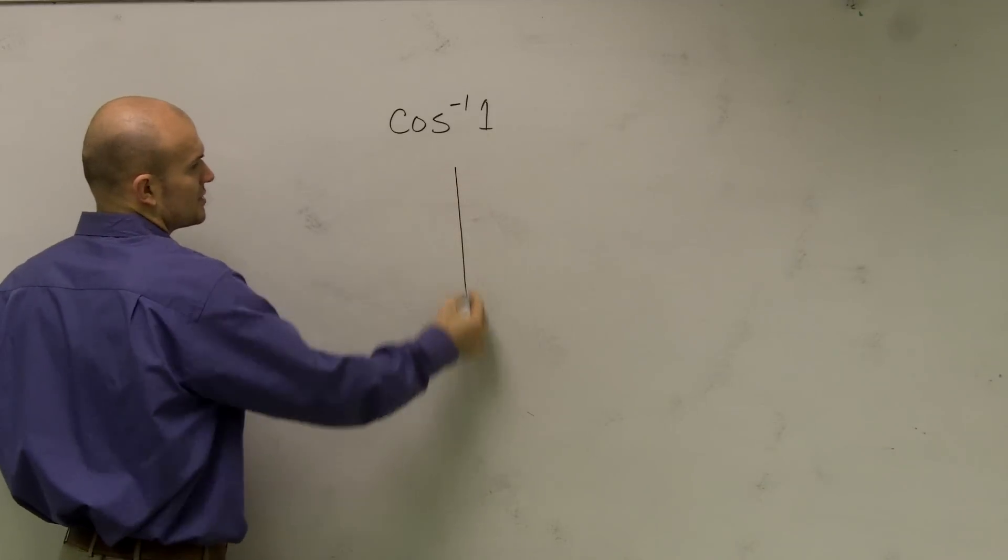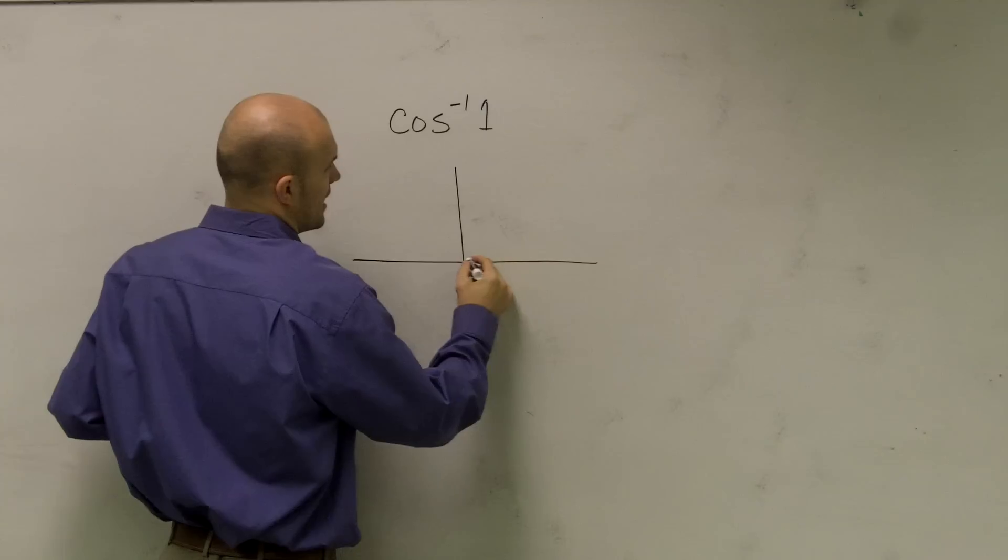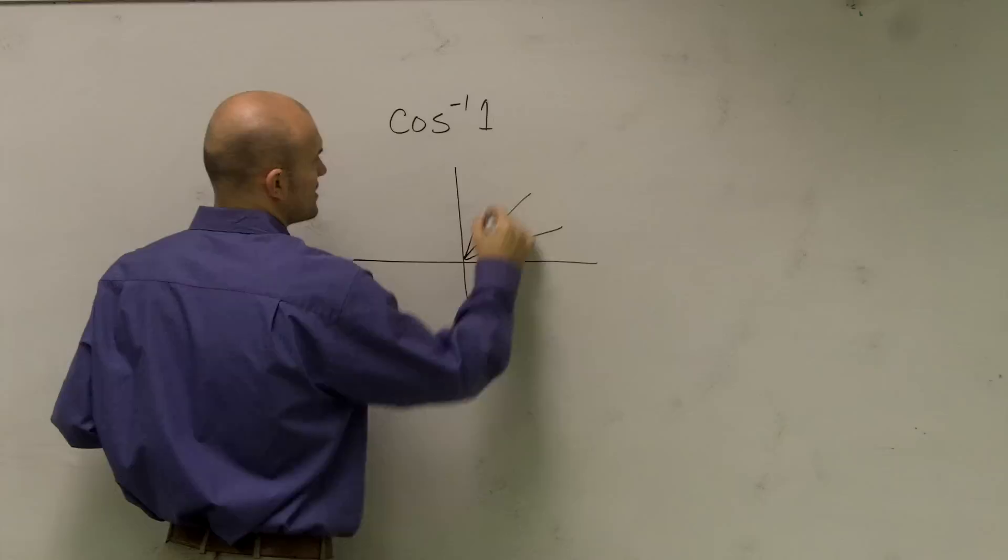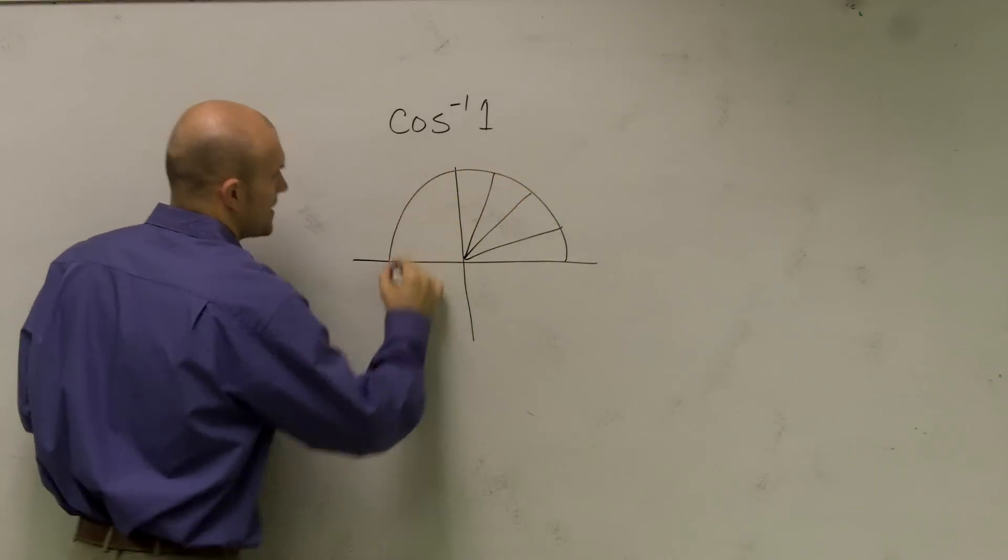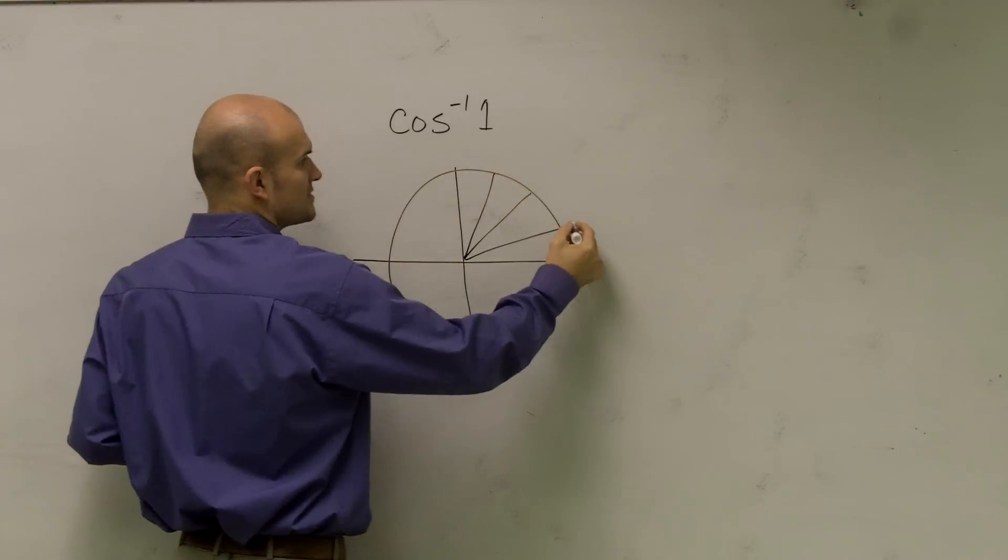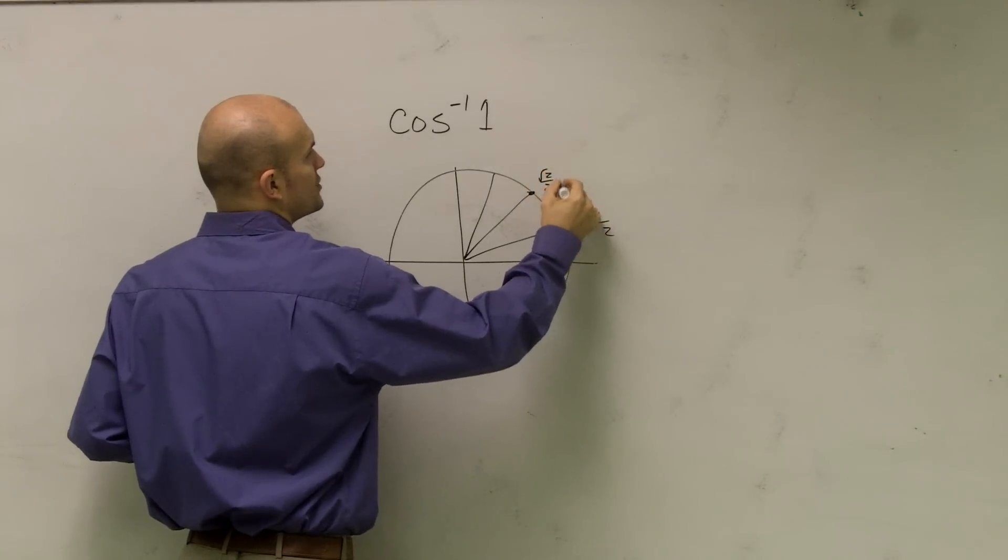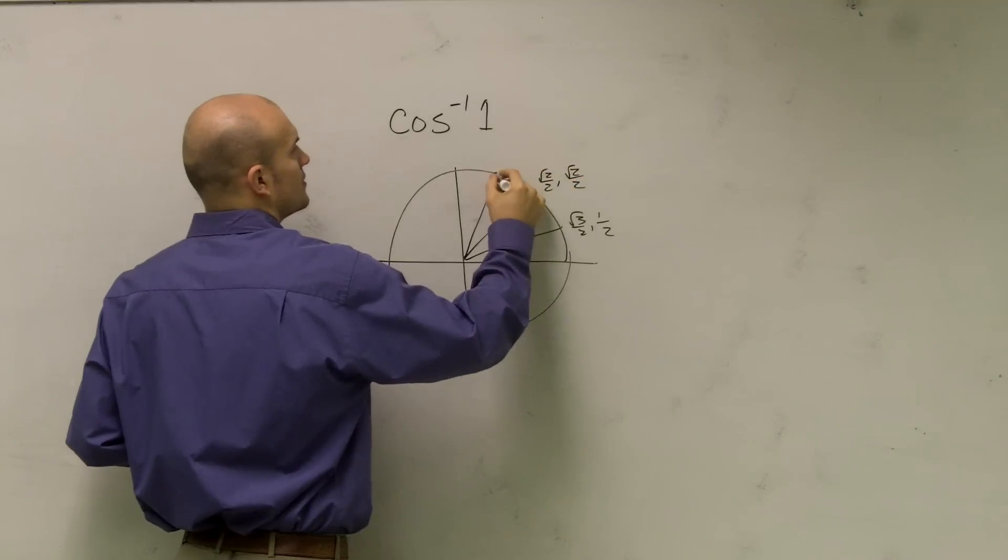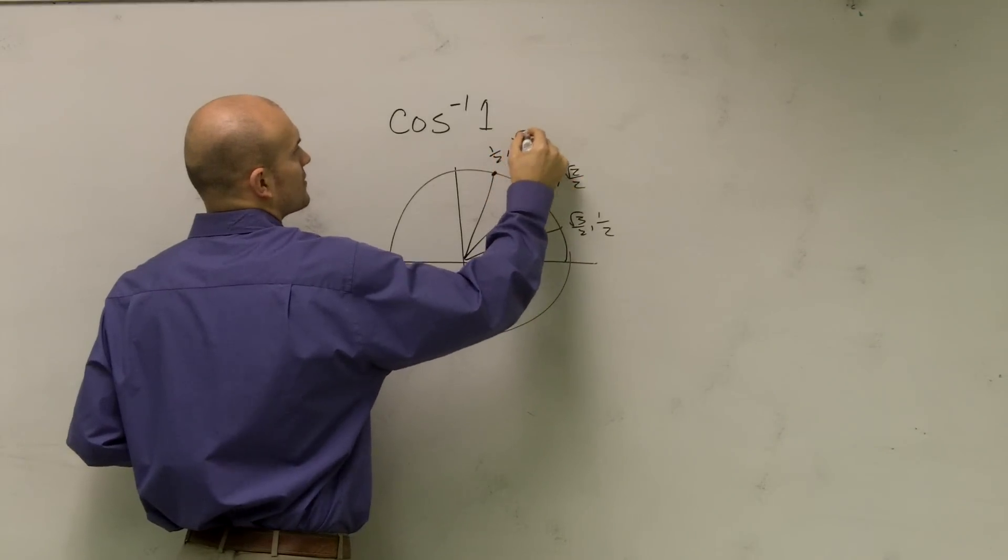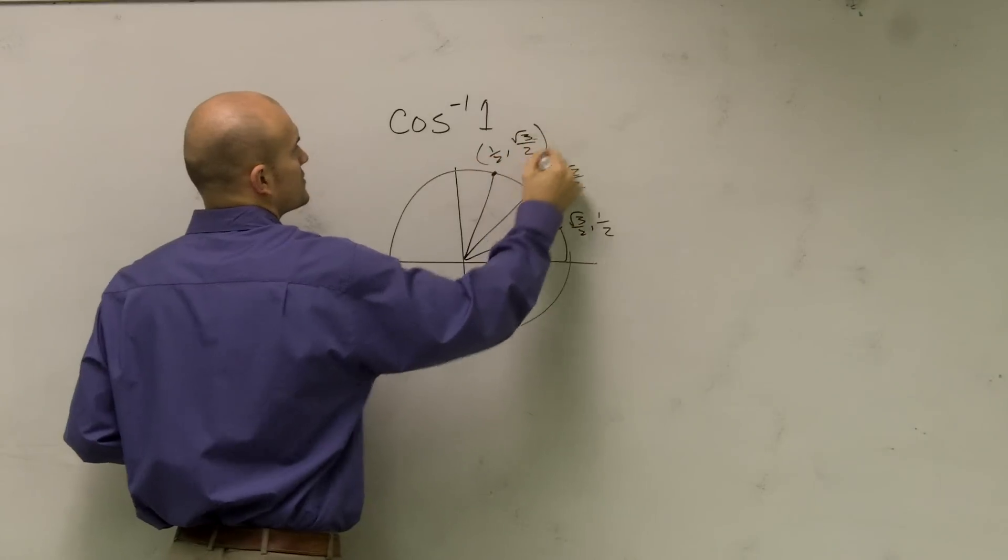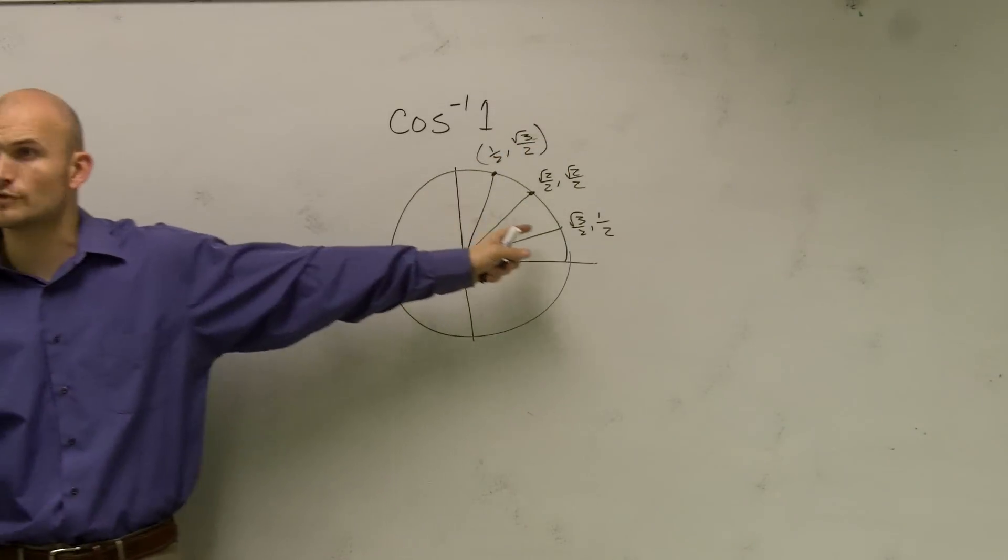Well, if I was going to draw a unit circle, I obviously have these three important points that we always first looked at, right? If this one is radical 3 over 2 comma 1 half, we have radical 2 over 2 comma radical 2 over 2. Then we have 1 half comma radical 3 over 2. That's your first quadrant.